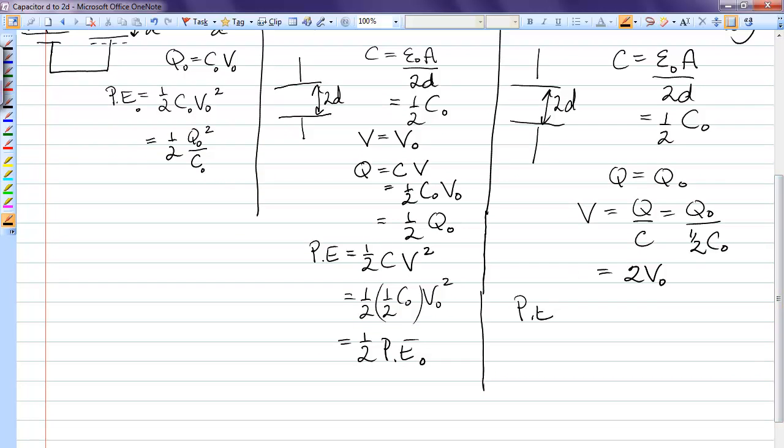Now, let's look at the potential energy in this new situation. Instead of half Cv squared, since both C and V are changing, I'm going to use half Q squared over C, because Q is not changing. So, half Q0 is the same as Q. C is half of C0. So, now I find the potential energy is double the original.